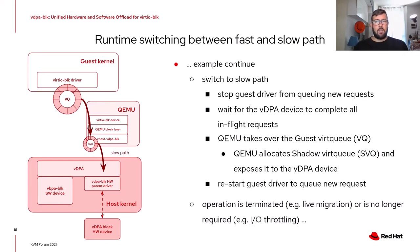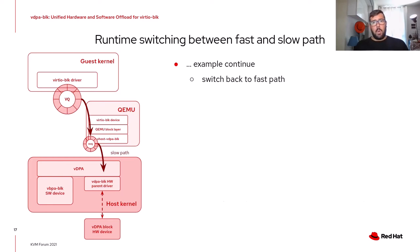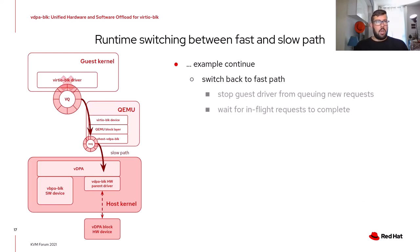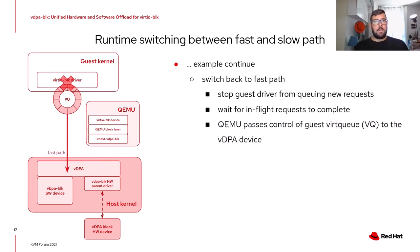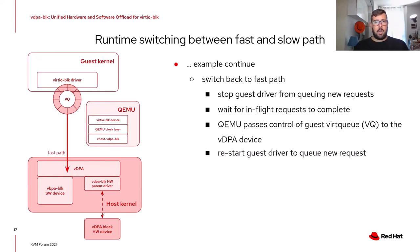After some time the requested operation ends — for example, we have successfully migrated the VM, or the operation is no longer required. So we can switch back to the fast path, doing the opposite of what we did before: stop the guest driver again, wait for in-flight requests to complete, and then QEMU passes control of the guest VirtQueue back to the VDPA device. At that point we restart the guest driver, taking advantage of the fast path for the best performance.